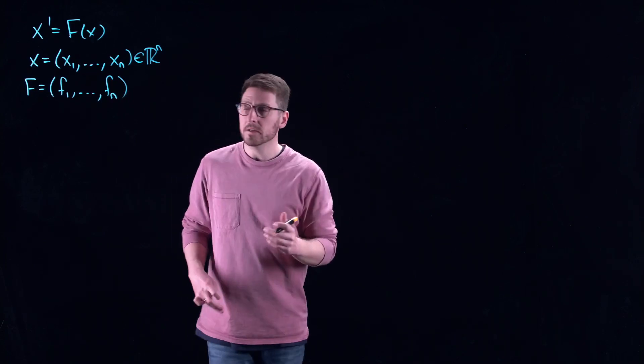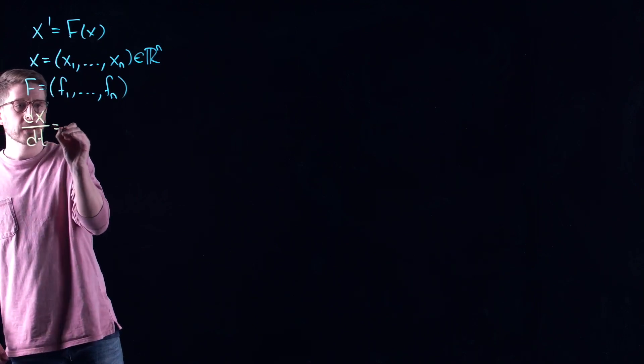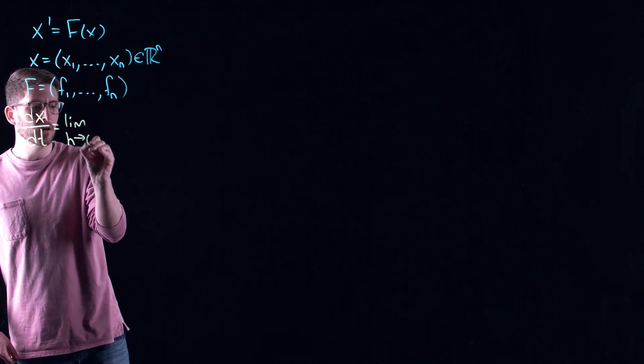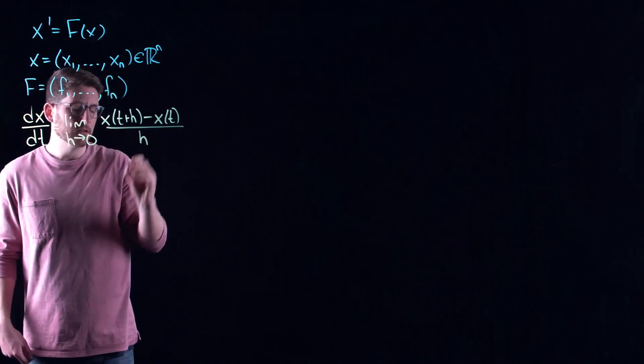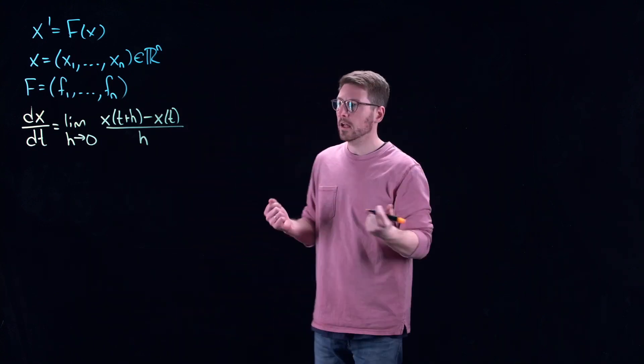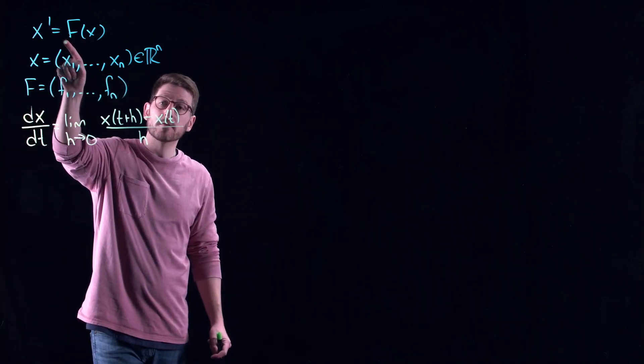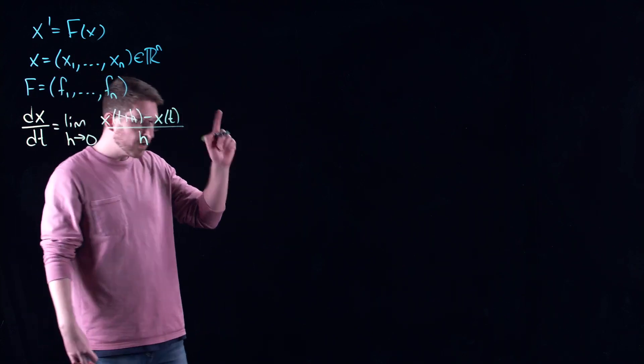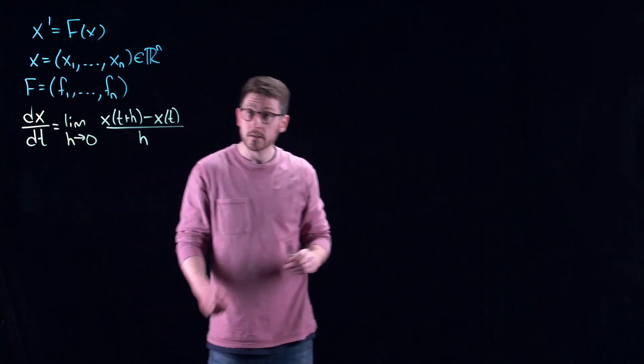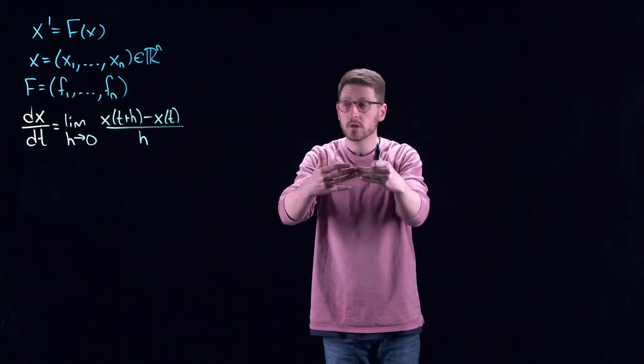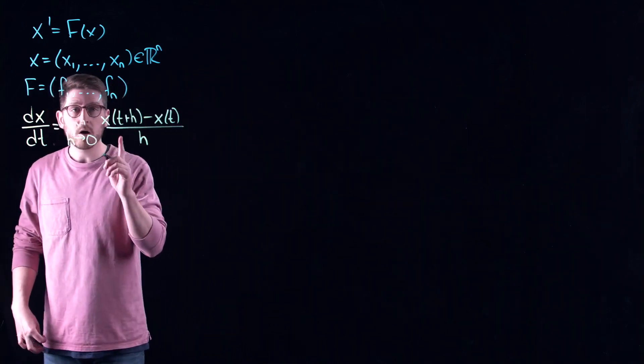What we would like to do is figure out a way to implement this on the computer. So what we can start by doing is we can remember the definition of a derivative. The derivative, by definition, is the limit as h goes to 0 of x of t plus h minus x of t divided by h. This is what you learned in calculus class.